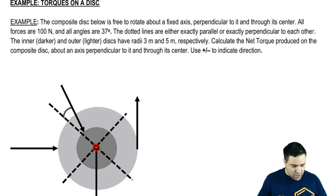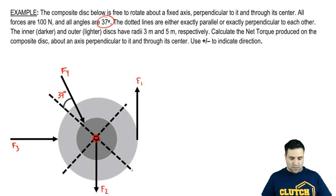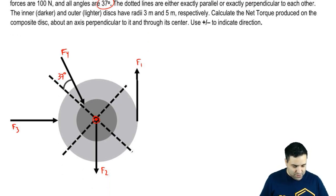All the forces listed here are 100 newtons and there's four of them. So let's just write F1, actually let's make this one F1, F2, F3, and this one's going to be F4. They're all 100 and the angles are 37. The only angle here is 37 is this one. All the other ones are either flat in the X or flat in the Y. The dotted lines are either exactly parallel or exactly perpendicular to each other. What does that mean? That just means that this line is the same as this line. They're parallel to each other and that these lines here make a 90 degree angle. So all these lines are making 90 degree angles with each other.